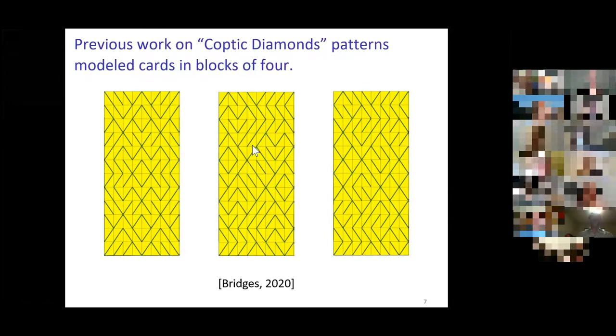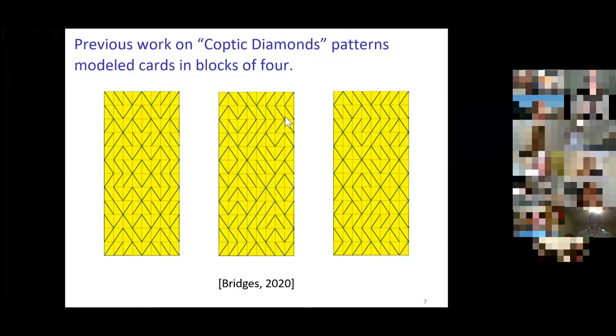I just modeled each of these vertical columns, which is a block of four cards in the Coptic Diamonds, with a different Markov chain. That worked fine for Coptic Diamonds. These are randomly generated Coptic Diamond patterns.